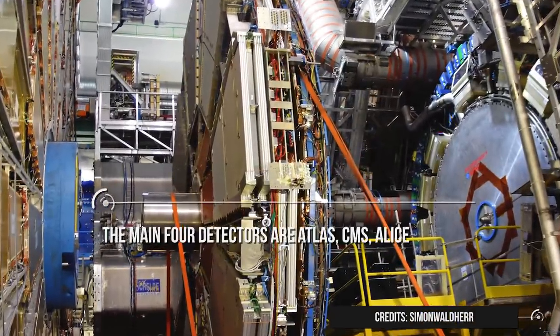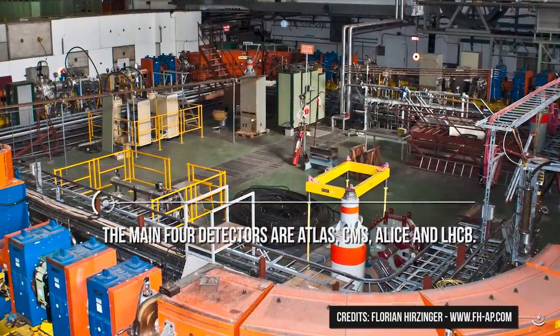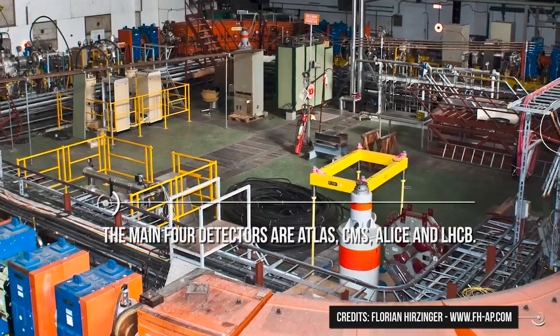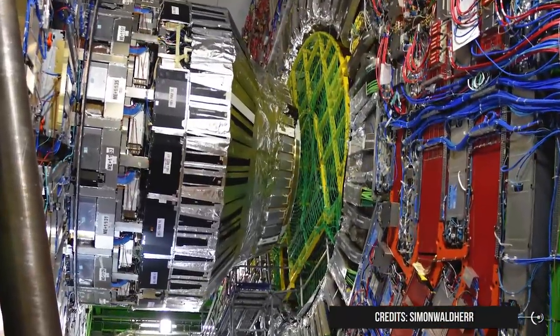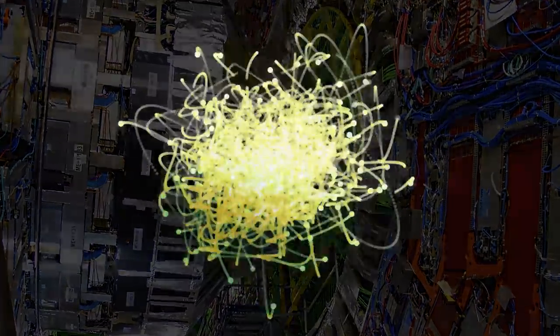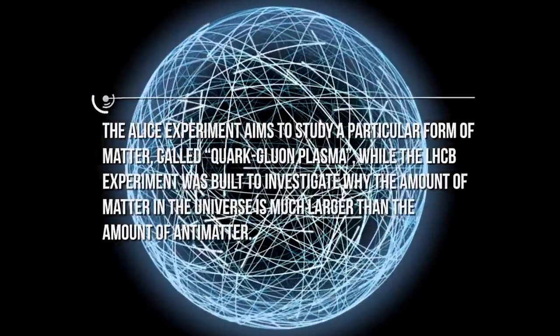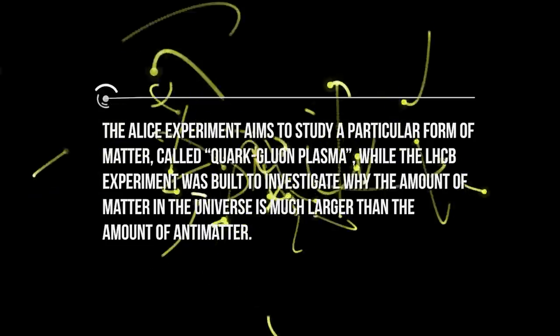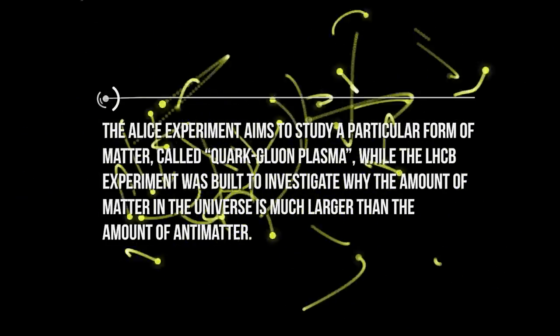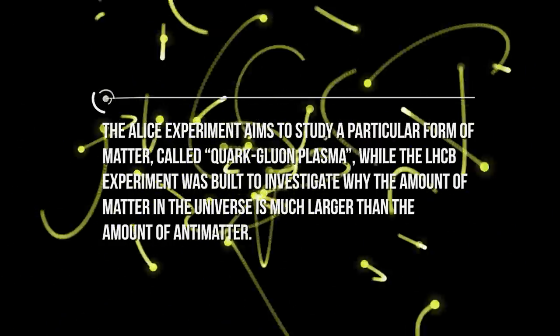In order to detect and identify them, and to discover new things about nature, scientists built huge detectors at these points of collision. The main four detectors are ATLAS, CMS, ALICE, and LHCb. ATLAS and CMS are the biggest ones, and they have multiple purposes. One of the biggest achievements of these two experiments is the discovery of the Higgs boson in 2012, the particle that gives mass to all others. The ALICE experiment aims to study a particular form of matter called quark-gluon plasma, while the LHCb experiment was built to investigate why the amount of matter in the universe is much larger than the amount of antimatter.